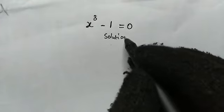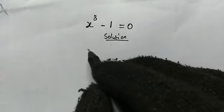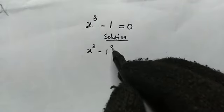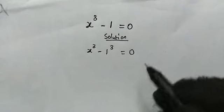We have here solution. So we have here x to the power of 3 minus 1, which is the same as 1 to the power of 3, and this is equal to 0.